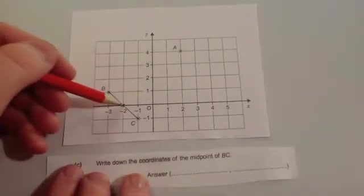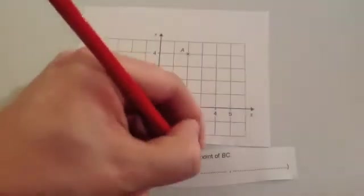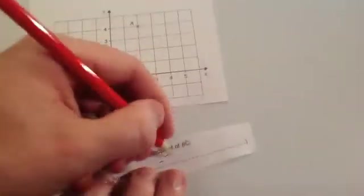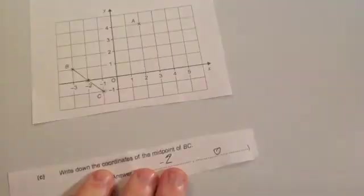So the coordinate would be minus 2, 0. So minus 2, minus 2, 0. So let's use the second method now for this question.